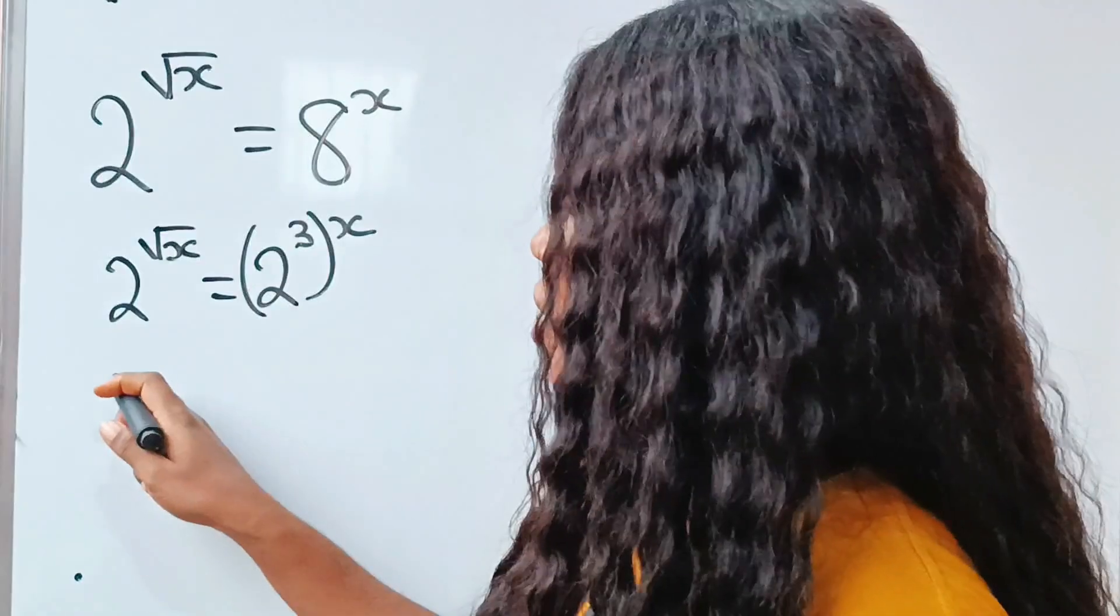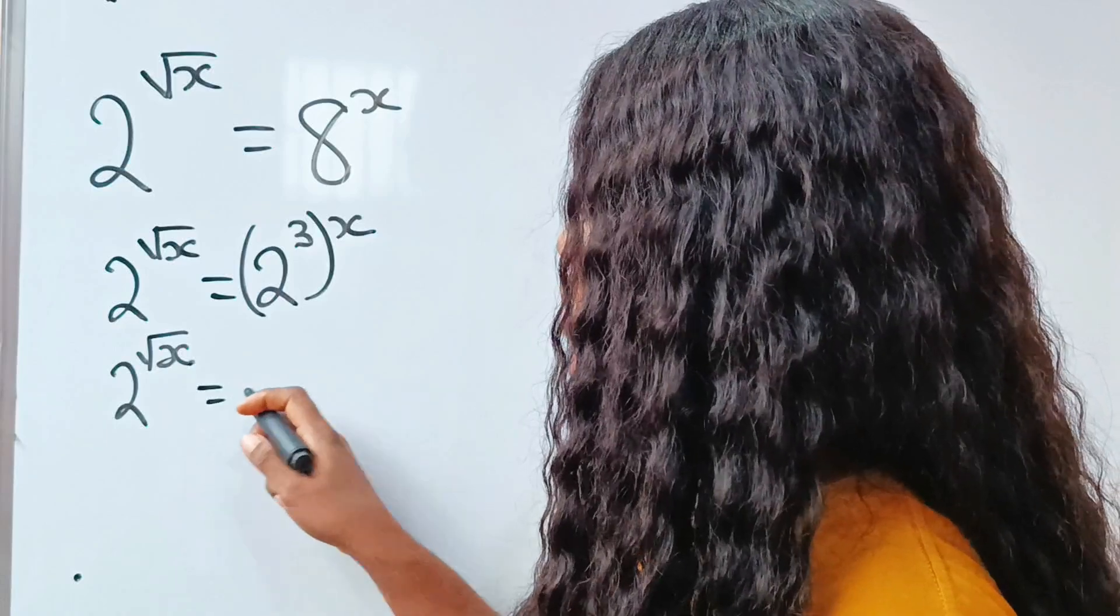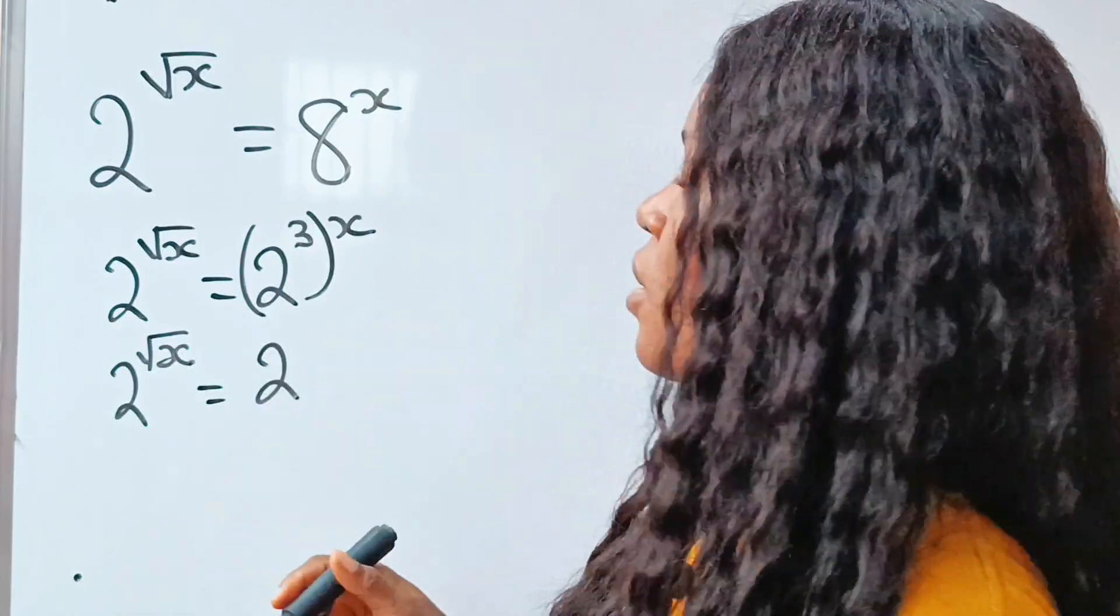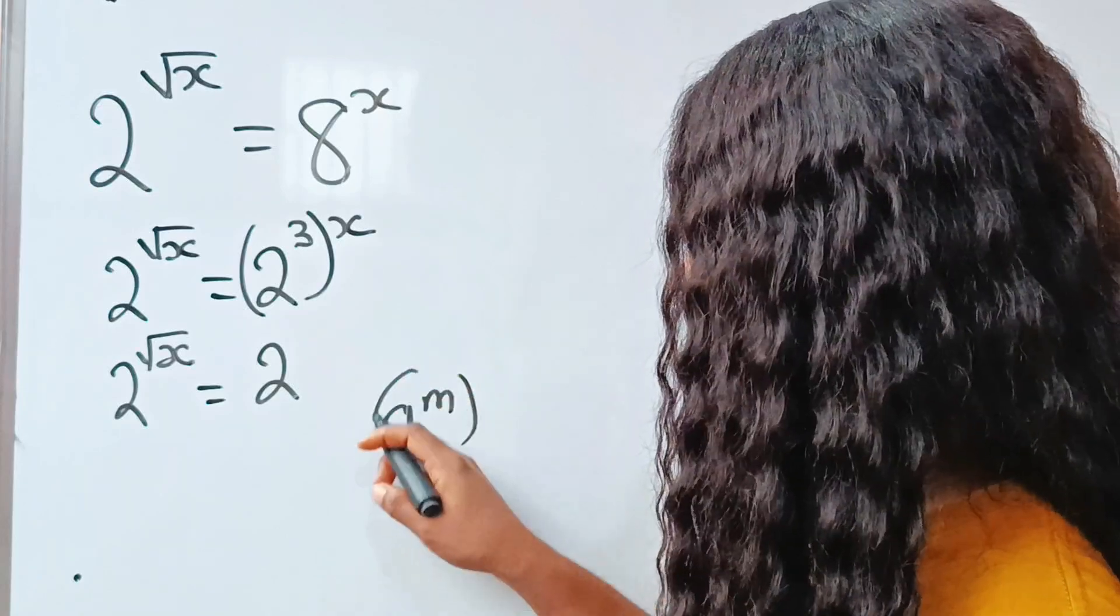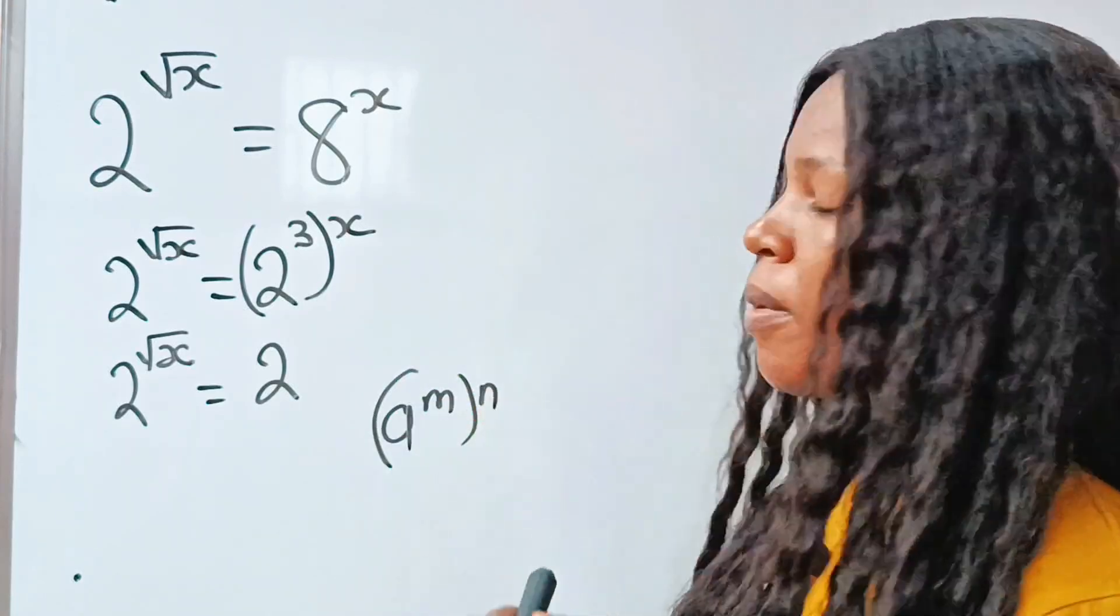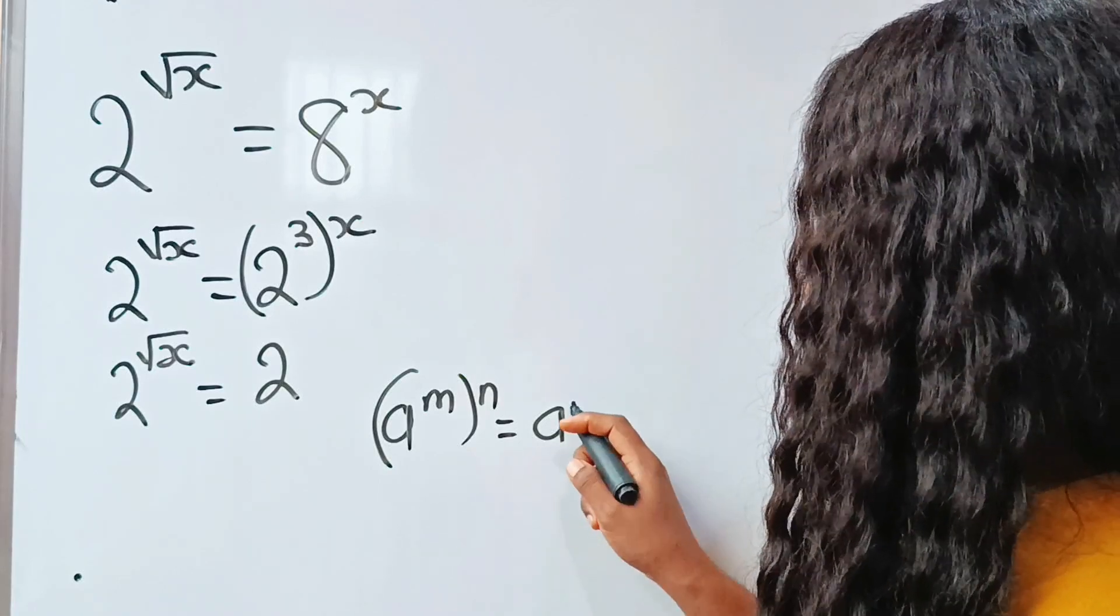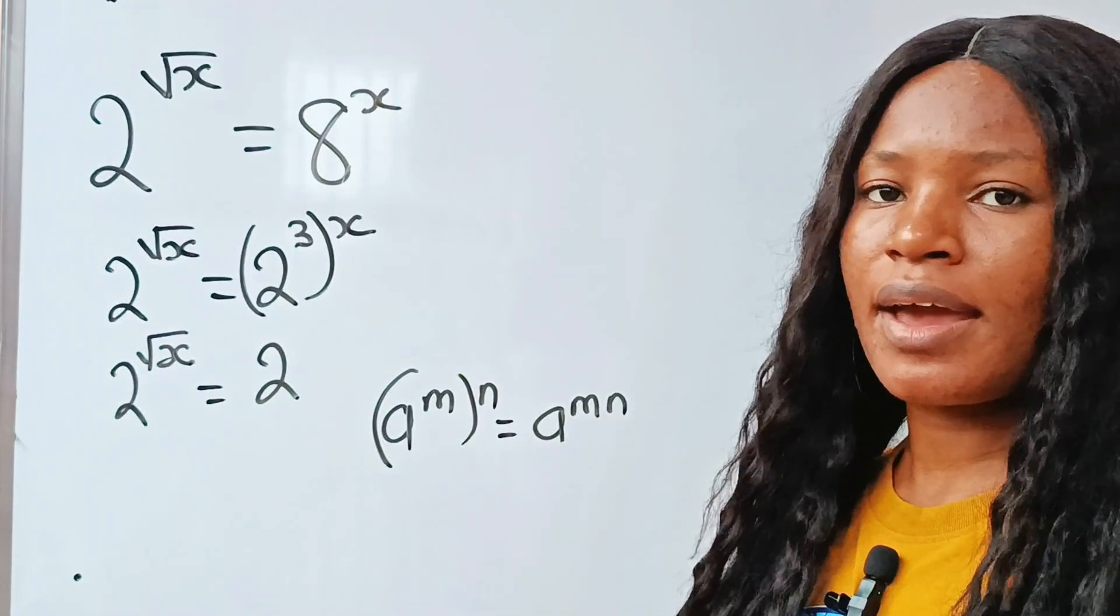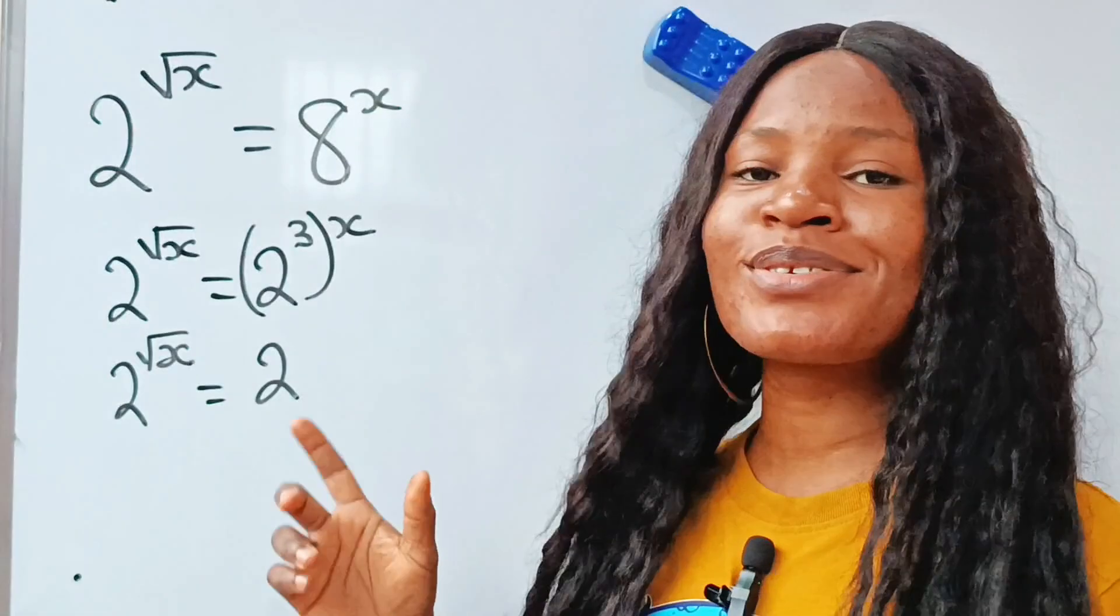So we have 2 raised to the power of square root of x is equal to 2. Now when you have a raised to the power of m and this is also raised to the power of n, this can be expressed as a raised to the power of m times n. So we are going to do that here.